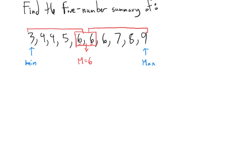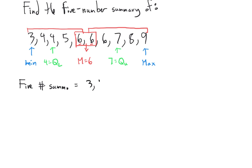With 5 data points in each half, we need the 3rd data point in each. The lower quartile is 4 and the upper quartile is 7. So the five-number summary for this data set is: 3, 4, 6, 7, 9.